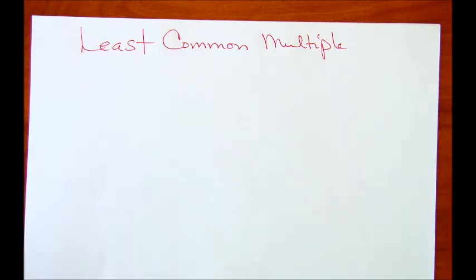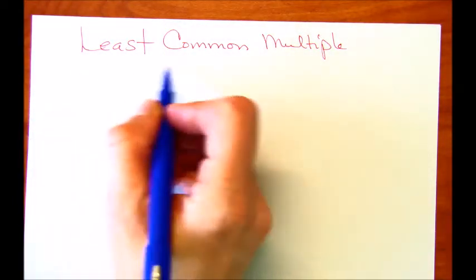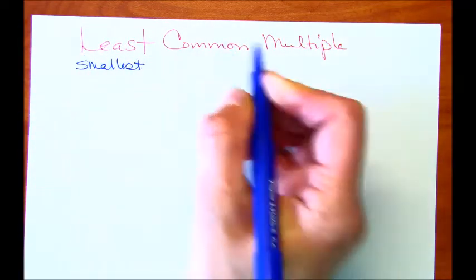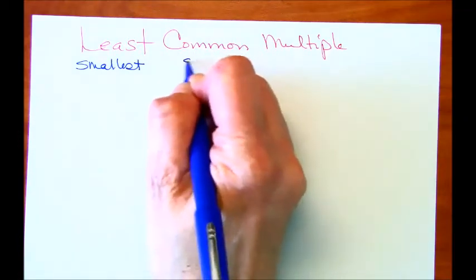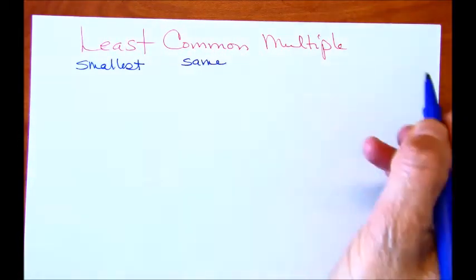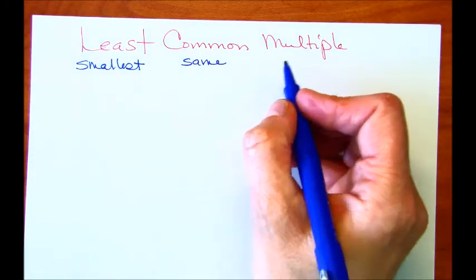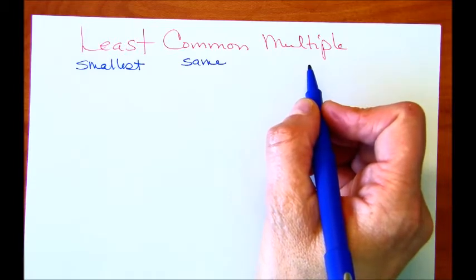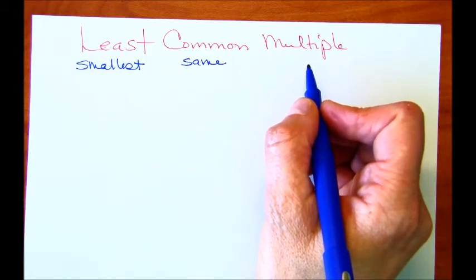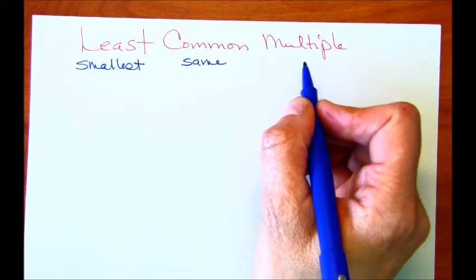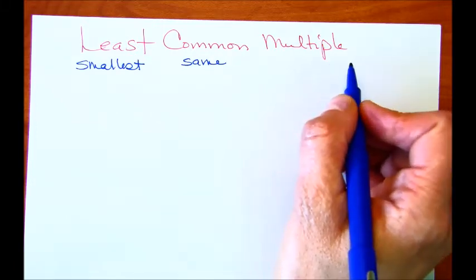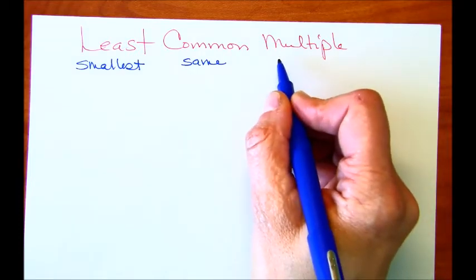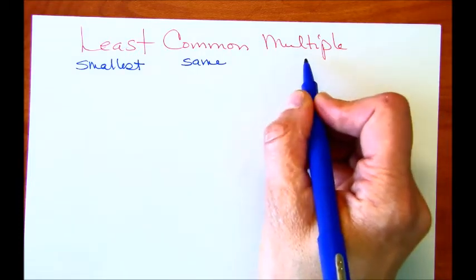Okay, so first off, least means smallest. Common, we could say that's going to mean the same. And a multiple is kind of the result of a multiplication problem. So if you're multiplying a number by an integer or another number, then you're going to get what's called a multiple of that number.